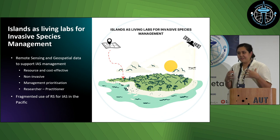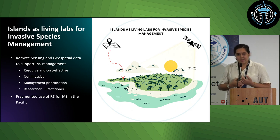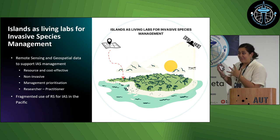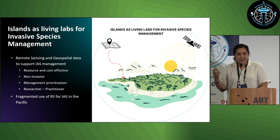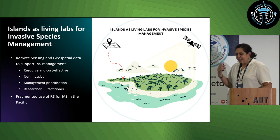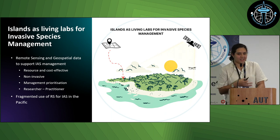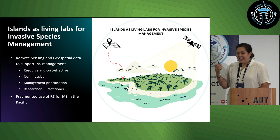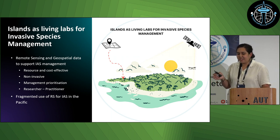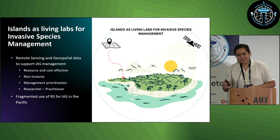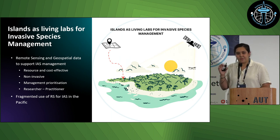Islands should be successful living labs in the Pacific — given how small they are, it would be fairly easy, conceptually, to implement remote sensing as a solution to the management of invasive species. Remote sensing is resource and cost effective; fieldwork in the Pacific becomes really expensive because of travel and cultural norms — you have to pay to enter certain areas to collect data. It's non-invasive, so you're not doing harm to culturally important places. And it would help with management prioritization. Currently, management is done through a talanoa, where communities determine what invasive plants or animal species are doing harm to their local islands. There is currently fragmented use of remote sensing for invasive alien species in the Pacific, with only two published known applications used for management.